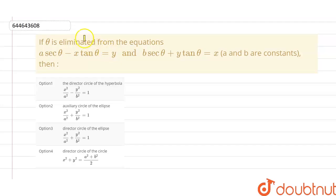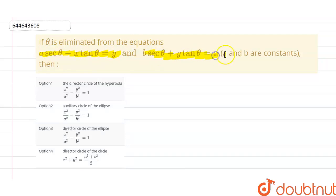The given question here is: if theta is eliminated from the equations — x = a sec θ minus x tan θ equals y, and b sec θ plus y tan θ equals x — where a and b are constants, then we have to find the resulting equation, which is the director circle among the given options.